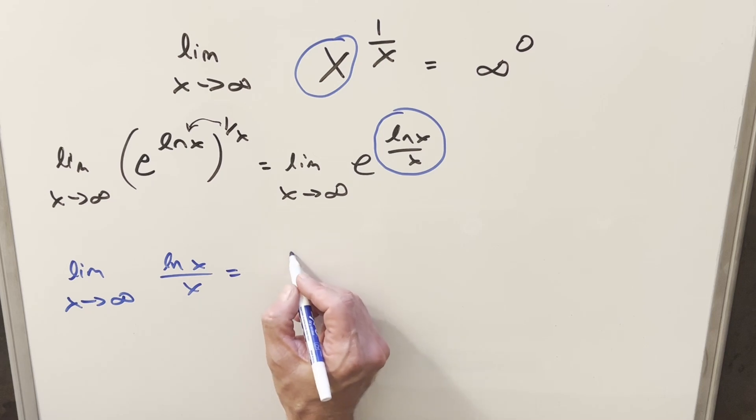we have a situation where ln of infinity is going to infinity. And in the denominator, this is also going to infinity. So we still have an indeterminate form. But because it's an infinity over infinity case, this lets us use L'Hopital's rule.